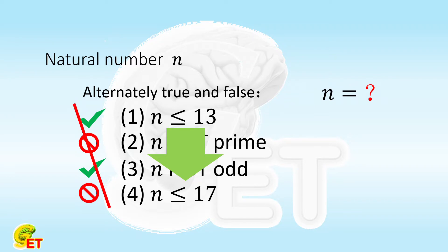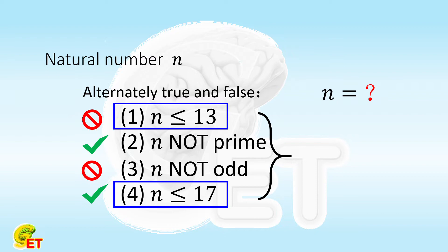The real case is, statements 1 and 3 are false, 2 and 4 are true. Since 1 is false, then we know that n is indeed bigger than 13. Combining statements 1 and 4, we obtain the range of n. There are in total 4 natural numbers in this range.